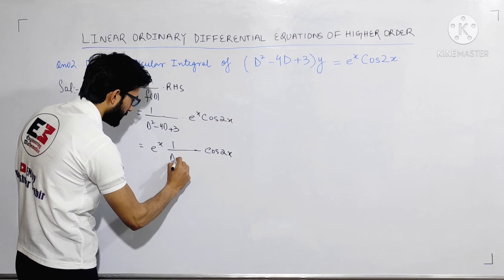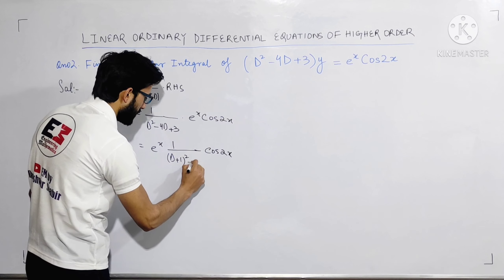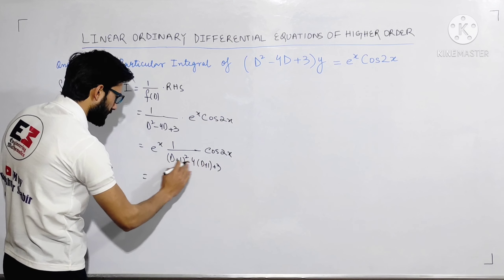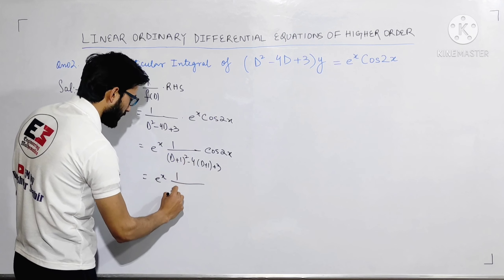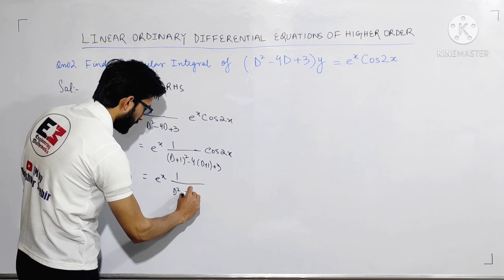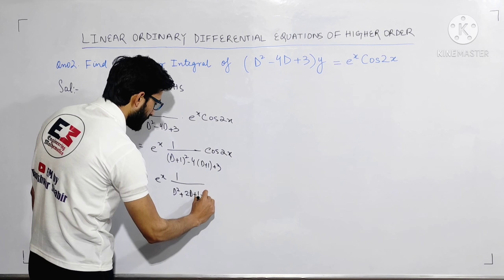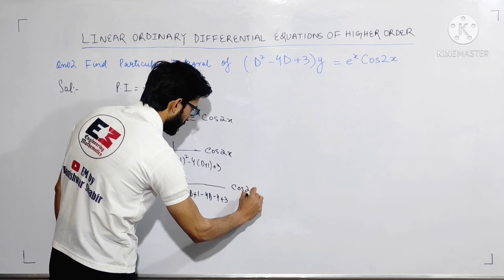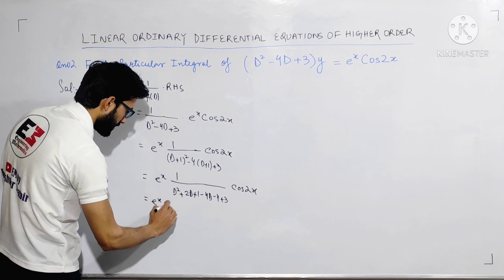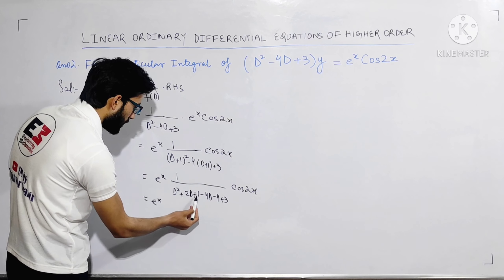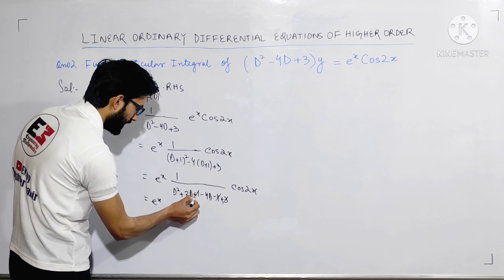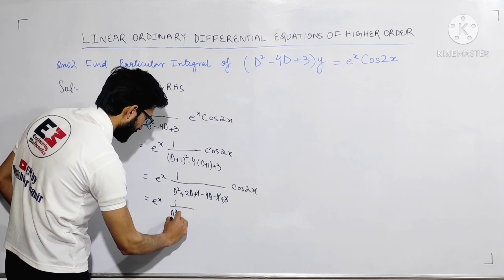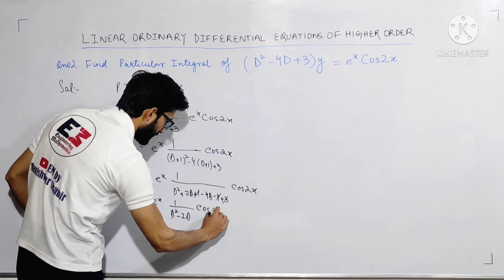Now let's simplify. (D+1)² = D²+2D+1. Then −4(D+1) = −4D−4, and plus 3 remains. So combining: −4+1 = −3 and −3+3 = 0, so the constant terms cancel. The D terms: +2D−4D = −2D. It becomes e^x · 1/(D²−2D) · cos2x.